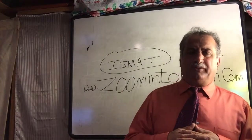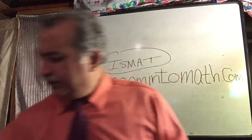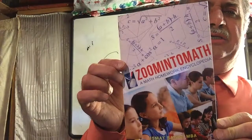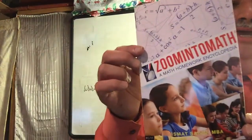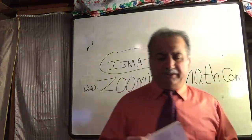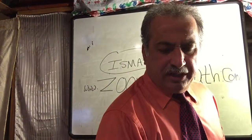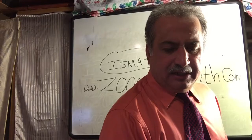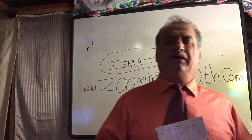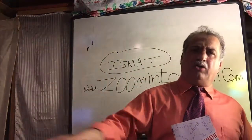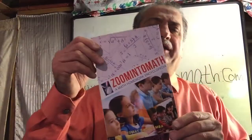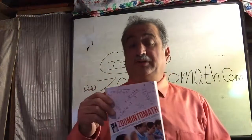I will start with my first book — it is 'Zoom Into Math.' It is a math homework encyclopedia, and it has great reviews. I have sold hundreds of them, including to Barnes & Noble — they have it at Barnes & Noble bookstore outlets and also online. It is available on Amazon.com.